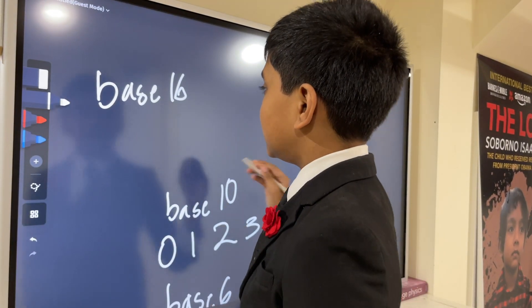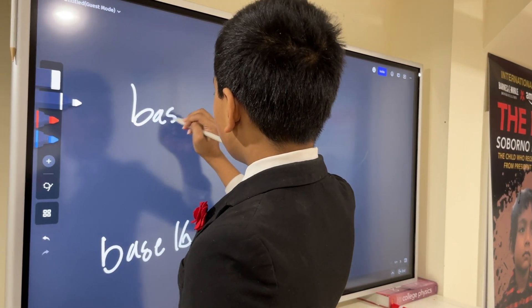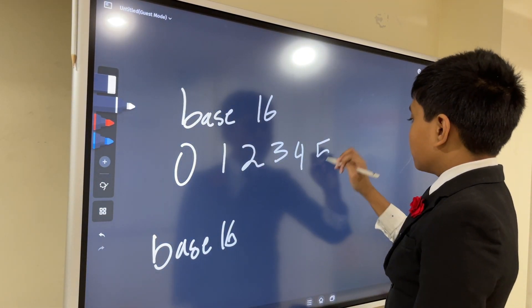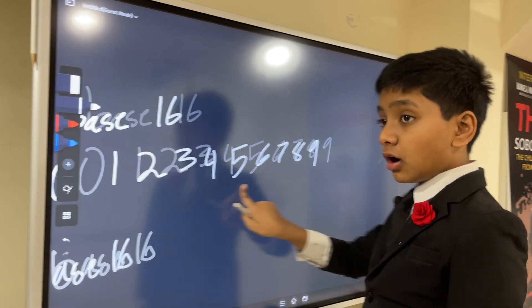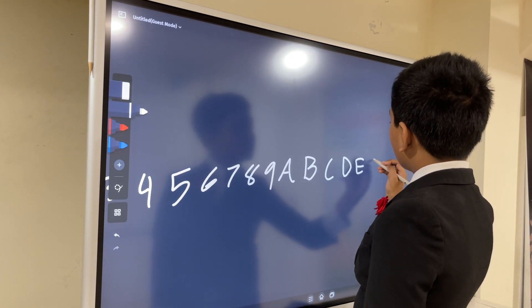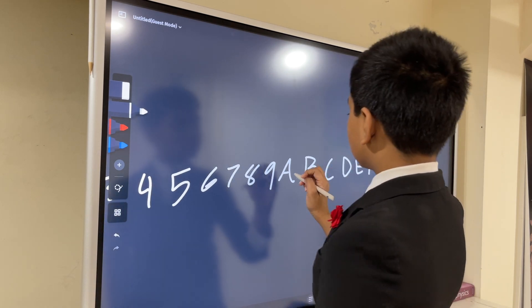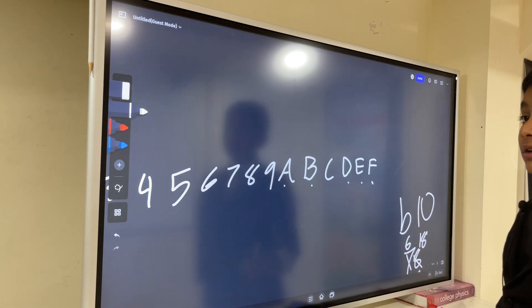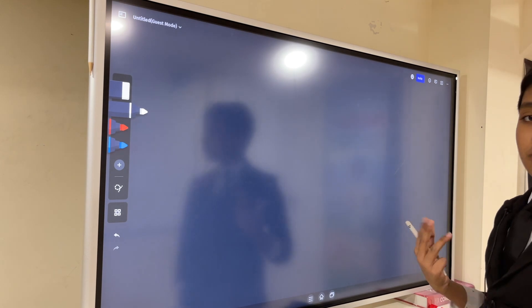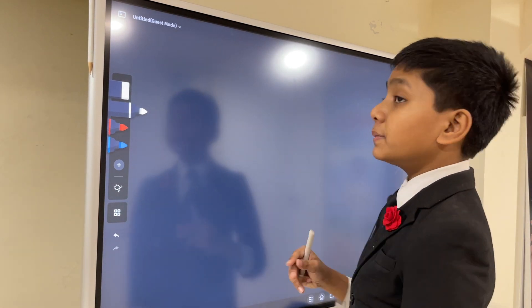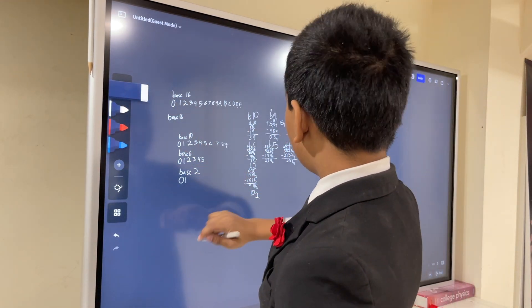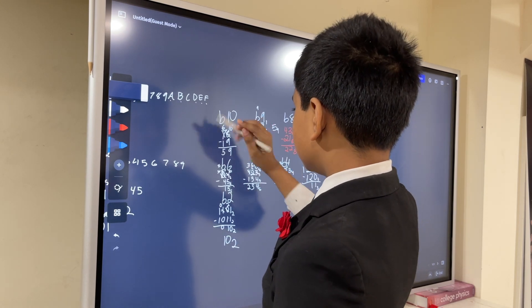Last time we did subtraction in different bases. Base 10 is the highest one commonly used, then base 16 which not only has the first 10 digits but also letters which serve as placeholders for numbers 10, 11, 12, 13, 14, 15 respectively. Now we're going to do multiplication in these different bases.